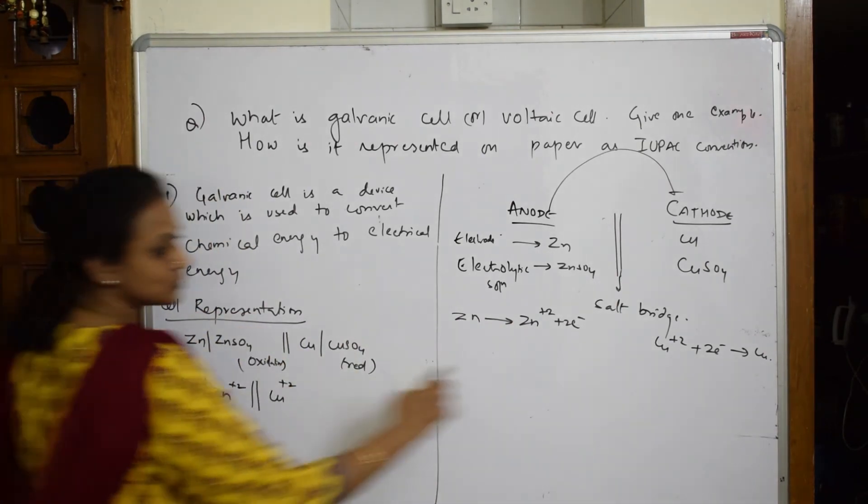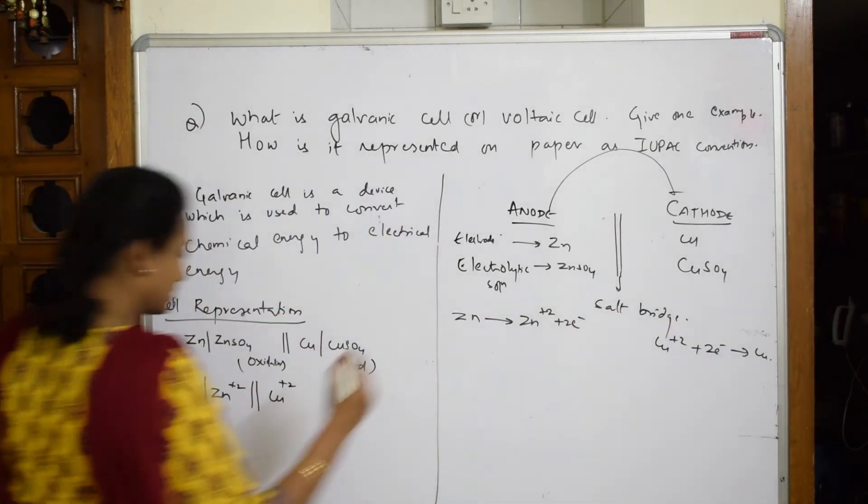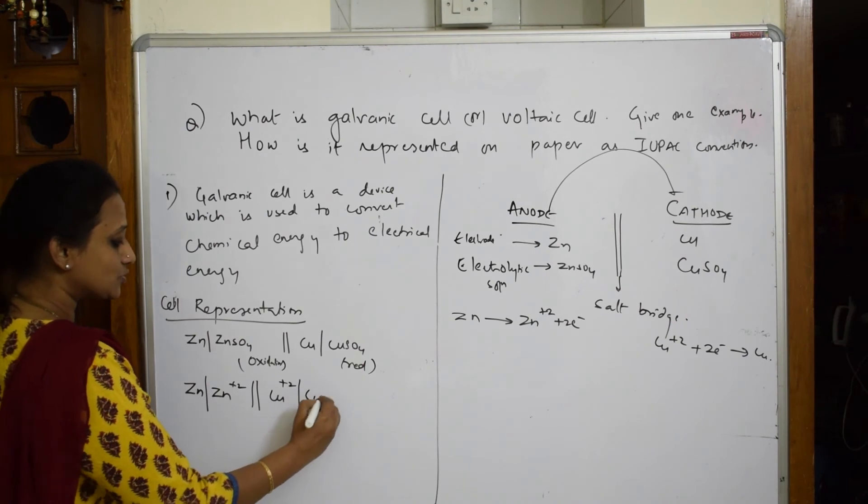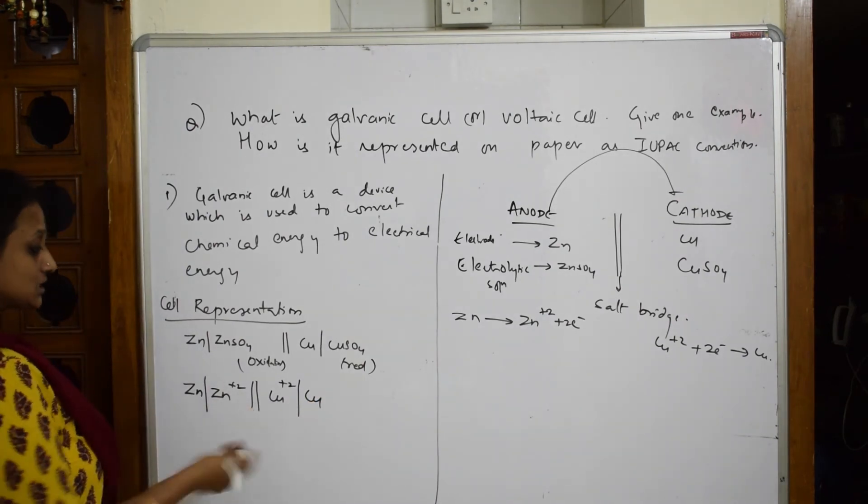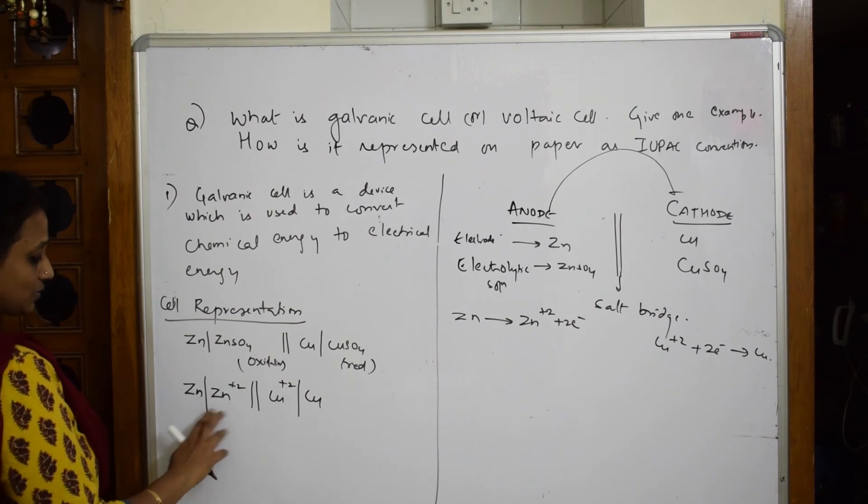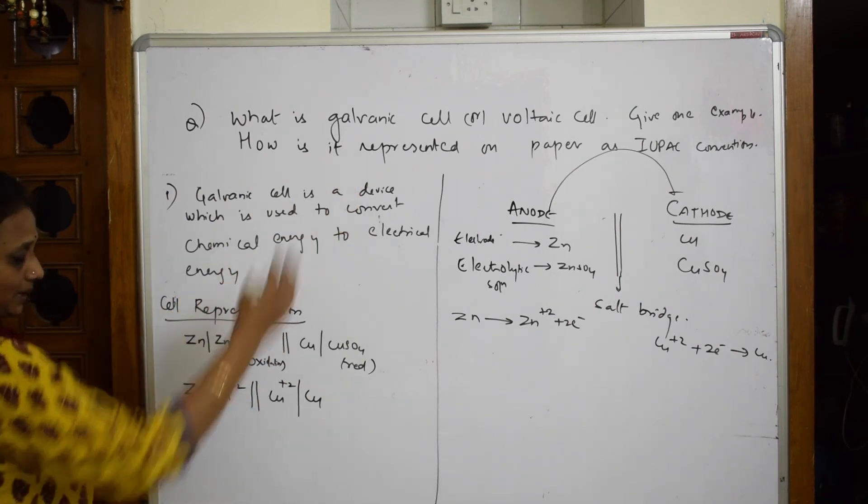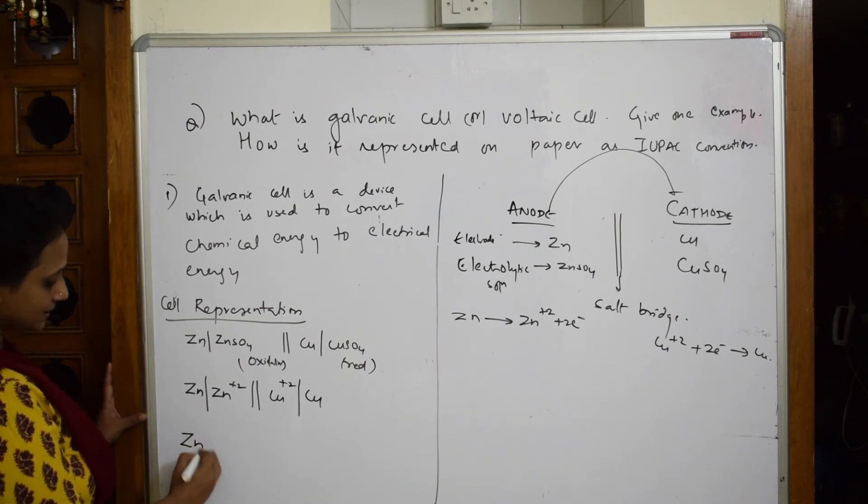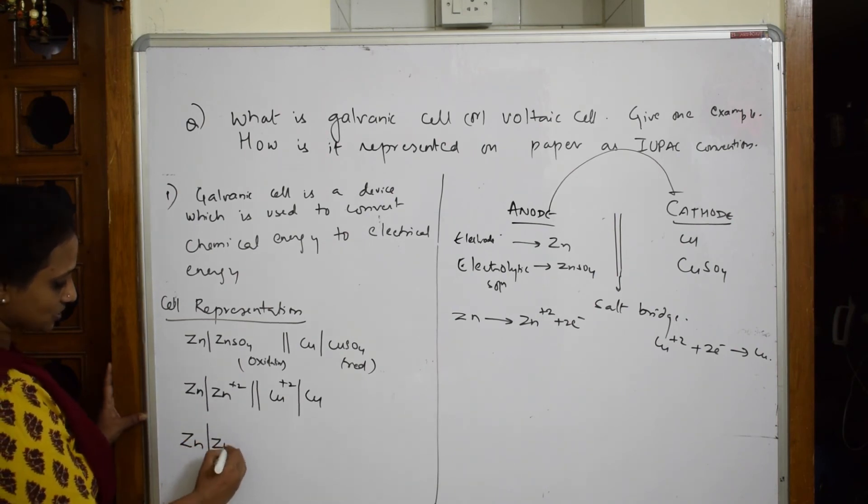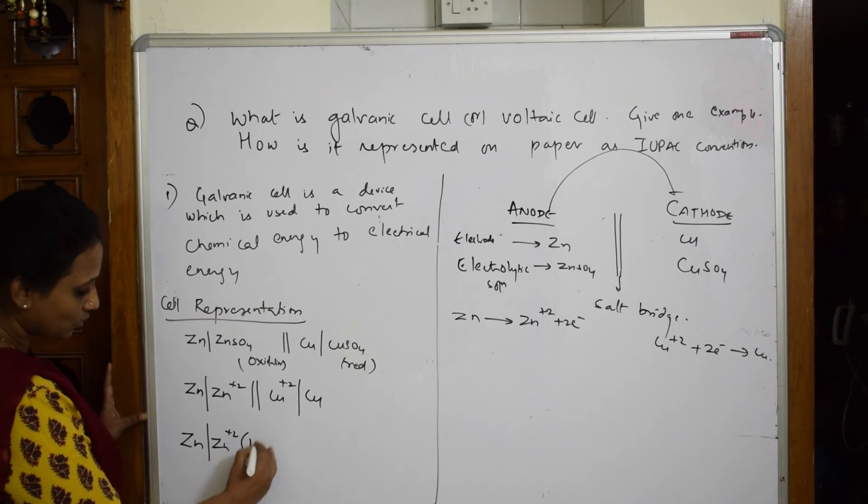So look here, zinc to Zn²⁺, zinc to Zn²⁺. Cu²⁺ to Cu. It has gone to converted Cu²⁺ to Cu. Then this is your salt bridge. Further I can also write now if I have to write in IUPAC convention or further write. See here, Zn by Zn²⁺ one molar.